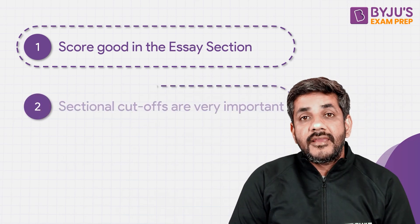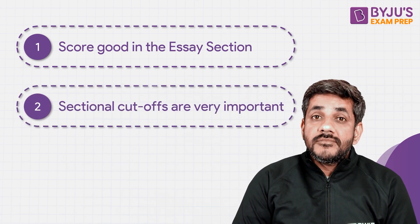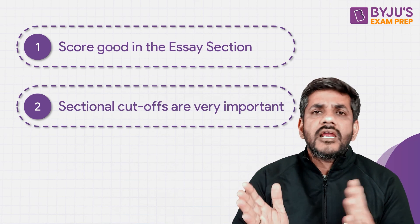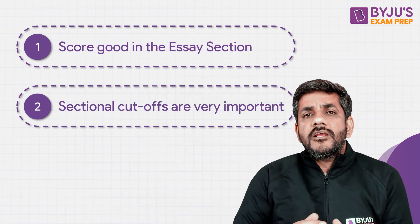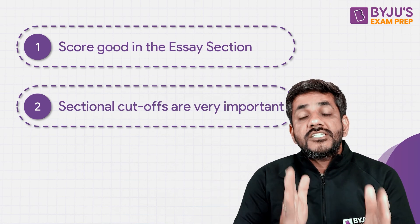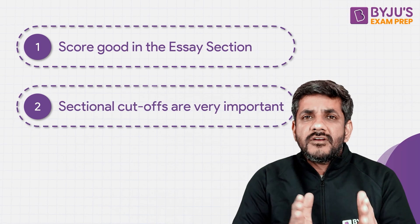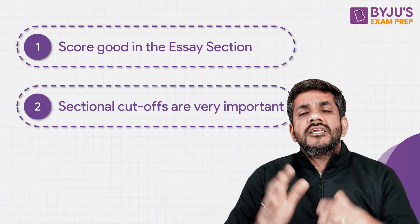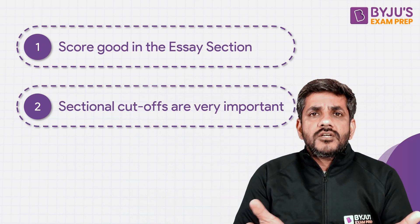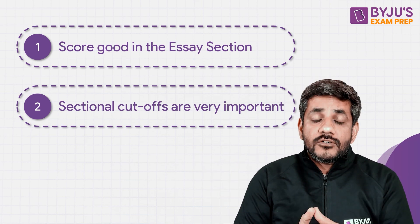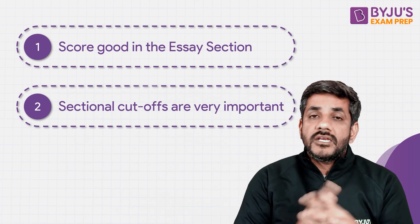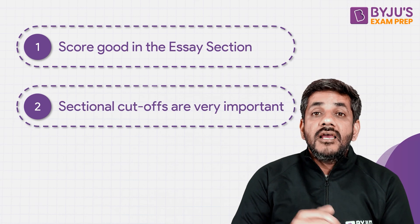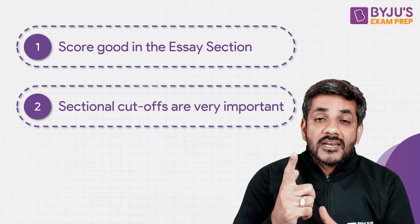The second important thing is that in the XAT exam, the sectional cutoffs are very important because they are quite high. It is not like IIFT where sectionals are pretty low and overall is high. In XAT, even the sectional cutoffs would be in the range of 7, 8, 9, whereas the overall cutoff across all three sections would be around 31, 32, 33. Of course, these cutoffs might go up slightly or go below as well depending upon the difficulty level of the paper. So keep these two things in mind: essay writing is back and sectional cutoffs are high.